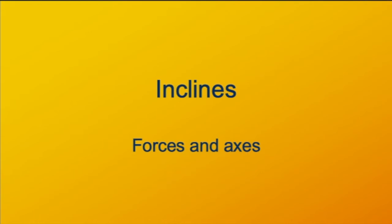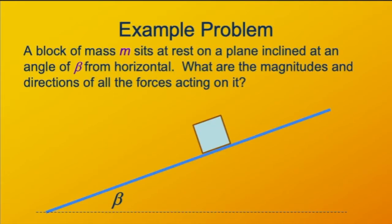I'd like to introduce a physical situation that comes up often enough that it's worth taking some time to see how to properly model it. It also gives us the opportunity to appreciate the benefits of being flexible with our coordinate systems. The situation is objects on inclines or slanted surfaces. Here's an example problem: we have a block of mass m that's at rest on a plane that's got an angle of beta with the horizontal.